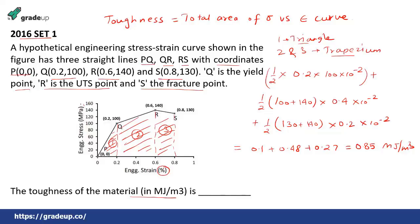The units work out because the stress is given in megapascal, so the result is already in megajoule per metre cube. The only key thing to notice is the multiplication by 10 to the power minus 2, because the engineering strain is given in percentage — that is the only thing you need to be careful about; otherwise the question is really easy.